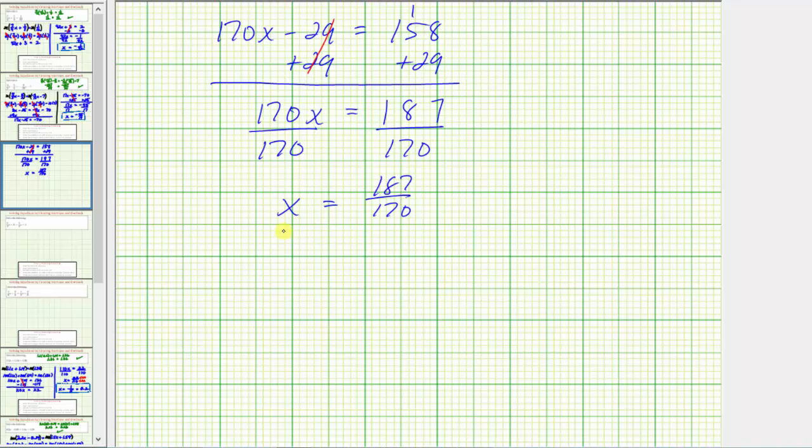And because the original equation contained decimals, we would normally give the solution in decimal form. If we did give the solution as a fraction though, we would want to simplify this fraction. 187 and 170 share a common factor of 17. So if we divide the numerator and denominator by 17, we can simplify the fraction. 187 divided by 17 is 11.